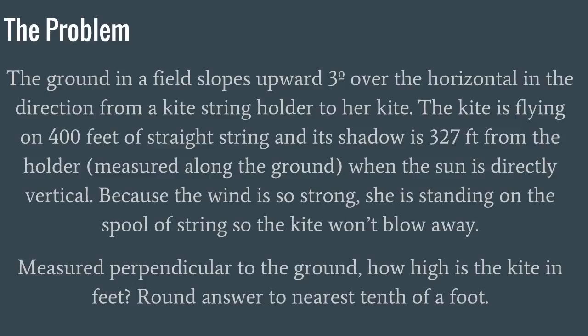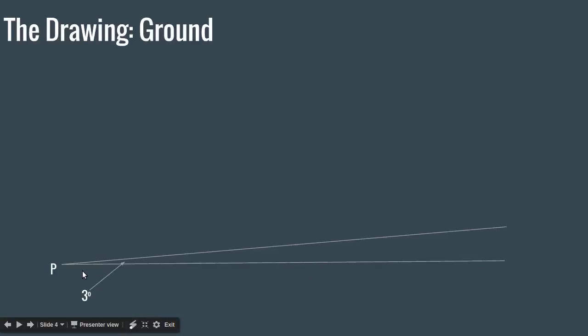So, there's a lot in this problem. The first thing we need to do is draw a diagram so we know what's going on exactly. First, let's figure out what's happening with the ground. They say that the ground slopes 3 degrees over the horizontal, so I've drawn a flat line, that's the horizontal, and then I've drawn the ground, which is kind of sloped upward, and between the ground and the horizontal, there's an angle of 3 degrees.